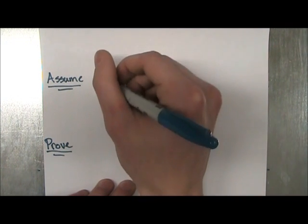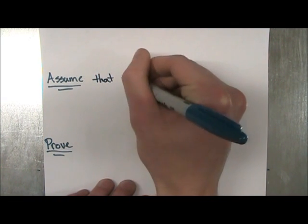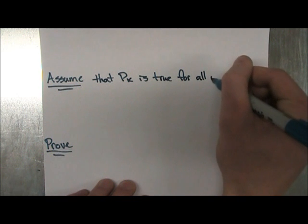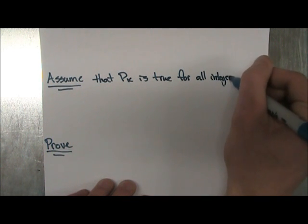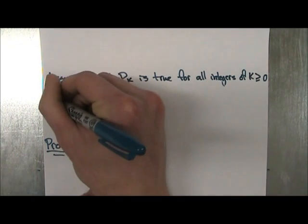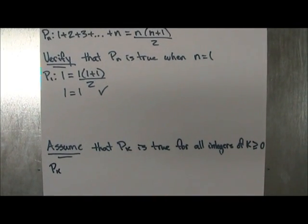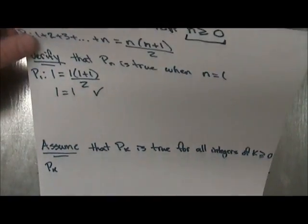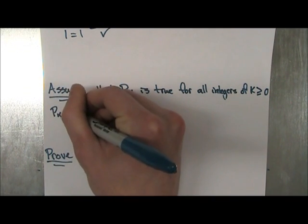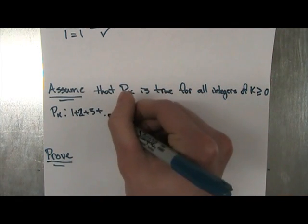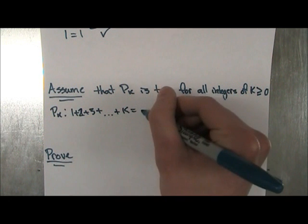So because we verified the first part, we can assume for the second part that Pk, so it's kind of a new proposition, is true for all integers of k greater or equal to 0. So our Pk, all you're going to do is take our Pn that we had, and you're going to replace the n's with k's. And all this is telling us is that we're assuming it's true for any integer k greater or equal to 0.